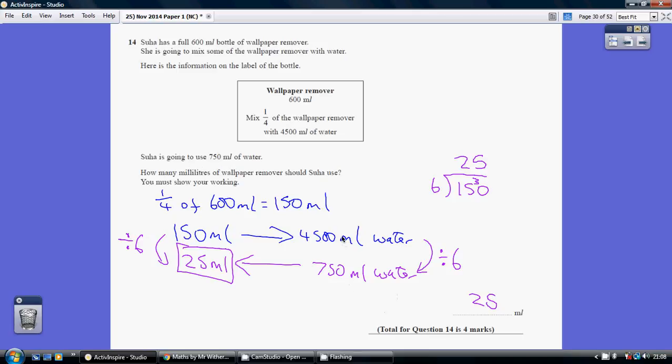So the water is this divided by this, so we divide it by 6. This is a sixth. So similarly, if we're using a sixth the amount of water, we're going to need a sixth the amount of the wallpaper remover.